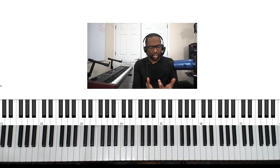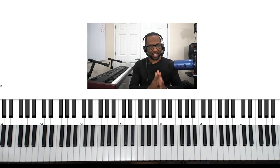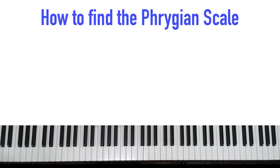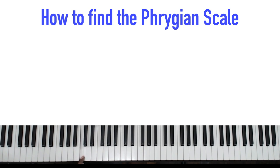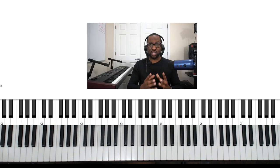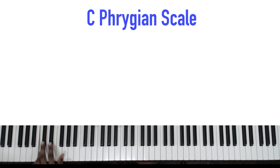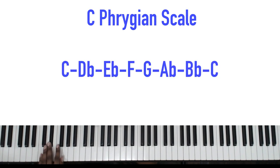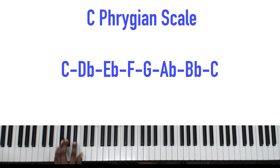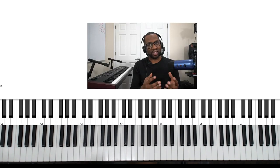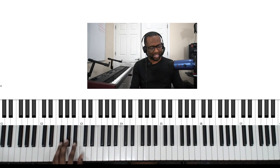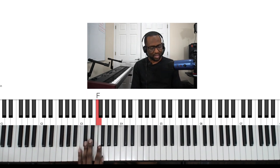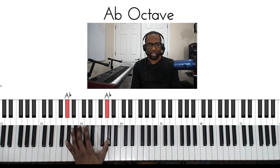If you're playing a different key, how do you find out the notes in the Phrygian scale? Here's what you do. Let's form a C Phrygian scale. The notes in the C Phrygian scale are C, D-flat, E-flat, F, G-flat, B, and C. You may recognize these as the same notes that are in an A-flat scale, but it's just starting on the C.